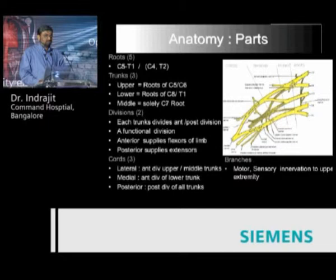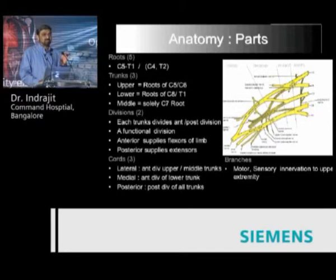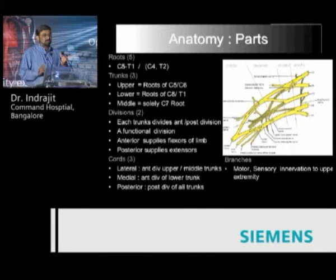The roots, which are very close to the spine at the neural foramen, come out and form three trunks: the upper, middle, and lower. The middle trunk is solely made of the C7 root. Each of these trunks has two divisions — anterior and posterior — which is also a functional division. The anterior division supplies the flexors of the limb, whereas the posterior supplies the extensors. Then finally there are cords and branches. Bulk of MR brachial plexus imaging focuses on the upper part — that is, roots and trunks and divisions — as cords and branches are much more difficult to map.